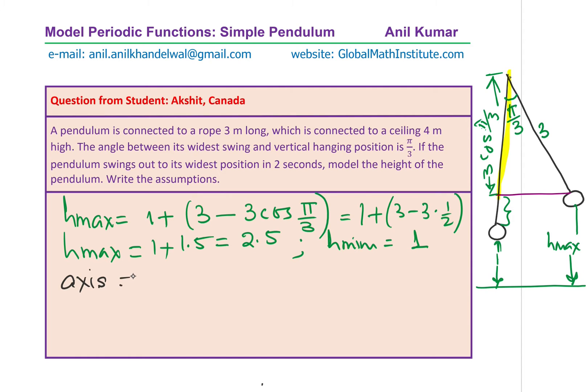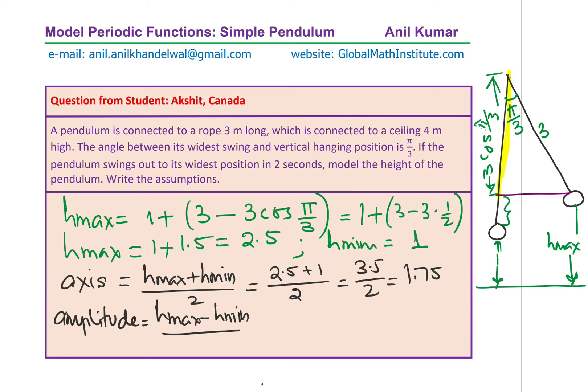Axis will be H max plus H minimum divide by 2, which is maximum being 2.5 plus 1 divided by 2. That is 3.5 divided by 2 or 1.75. Amplitude is going to be difference of these, divide by 2. 2.5 minus 1 divided by 2. That means 1.5 divided by 2 or 0.75. We already calculated the value of K, which is pi by 4 for us.